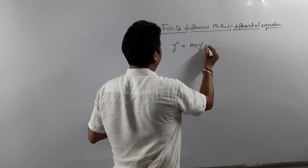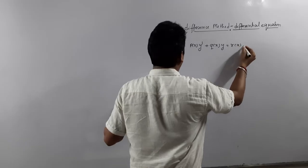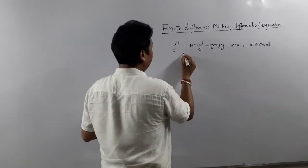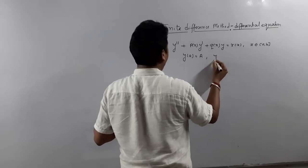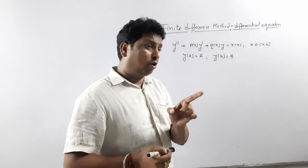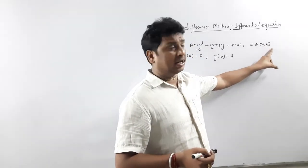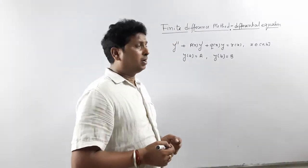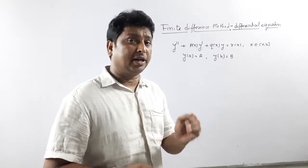Here x belongs to the closed interval [a, b], with boundary conditions y(a) = α and y(b) = β. The boundary x lies between a and b, so a and b represent the boundaries. When conditions are given on the boundary, it is called a boundary value problem. We solve this second order differential equation using the finite difference method.